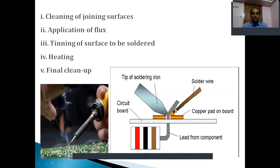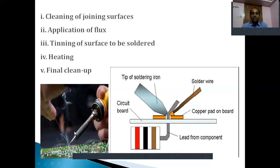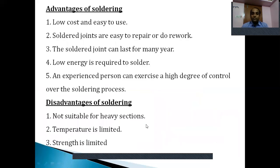The joint formed in the soldering process is not a permanent joint — it is a temporary joint. Why? Because it is carried out at a temperature less than 450 degrees Celsius. Due to sudden voltage fluctuations, electronic devices such as televisions or radios may malfunction, because whatever joint was done has melted or failed. That is the reason the soldering joint cannot be called permanent — it is a temporary joint.